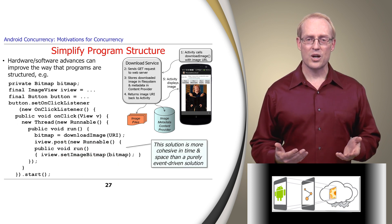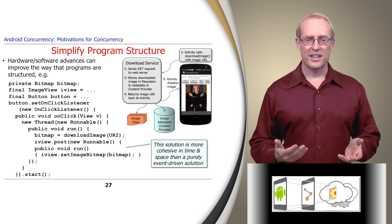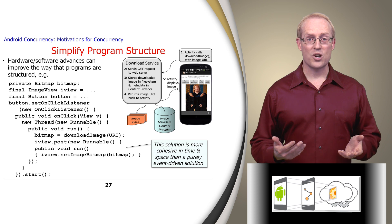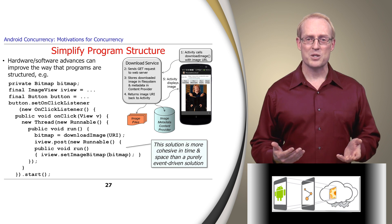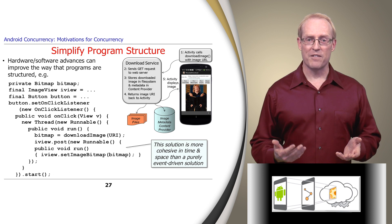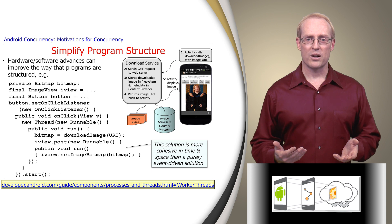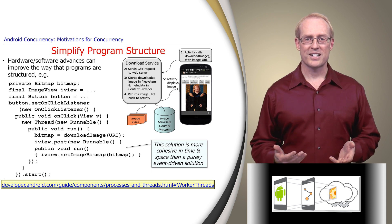If you look carefully at this code snippet, you'll see how concisely structured it is. In particular, the image download and display logic is cohesive in time and space, rather than being scattered throughout the code, as would be the case in a purely event-driven solution. This link describes the Android worker thread's concurrency model, which we'll cover later in this section.